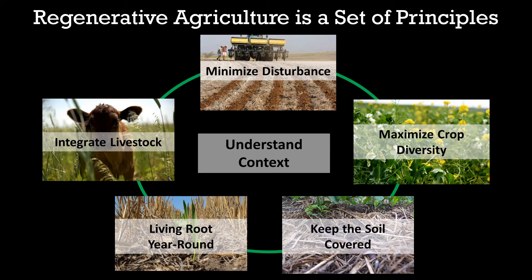The last principle is to integrate livestock. By integrating livestock into cropland and managing them in dense herds with frequent moves, farmers can more quickly regenerate their farm ecosystem. Livestock can eat things people can't, so it makes it easier for farmers to economically grow a greater diversity of plants. And the animal impact through trampling, dung, and urine can speed up nutrient cycling and improve soil health.